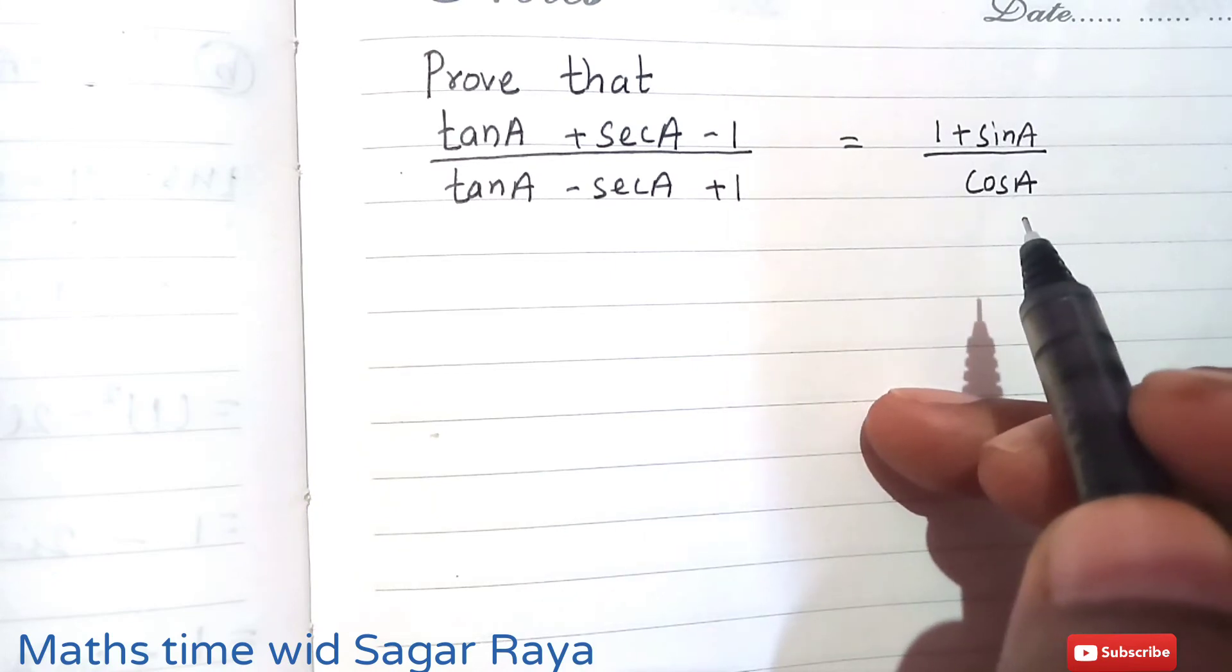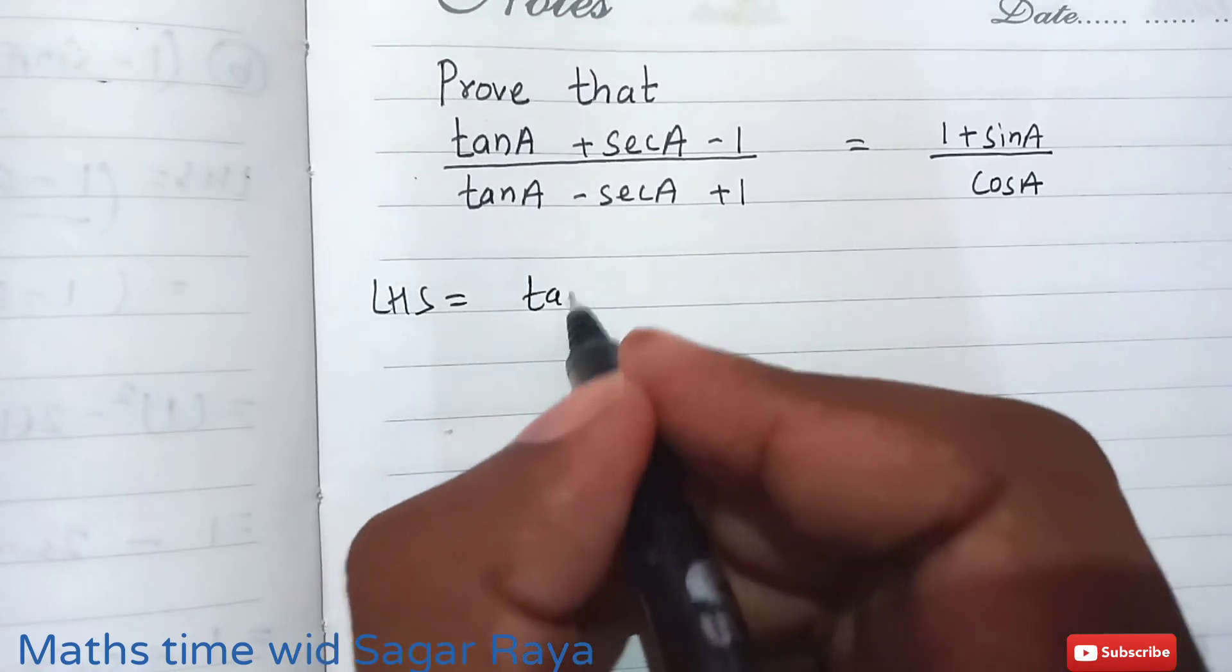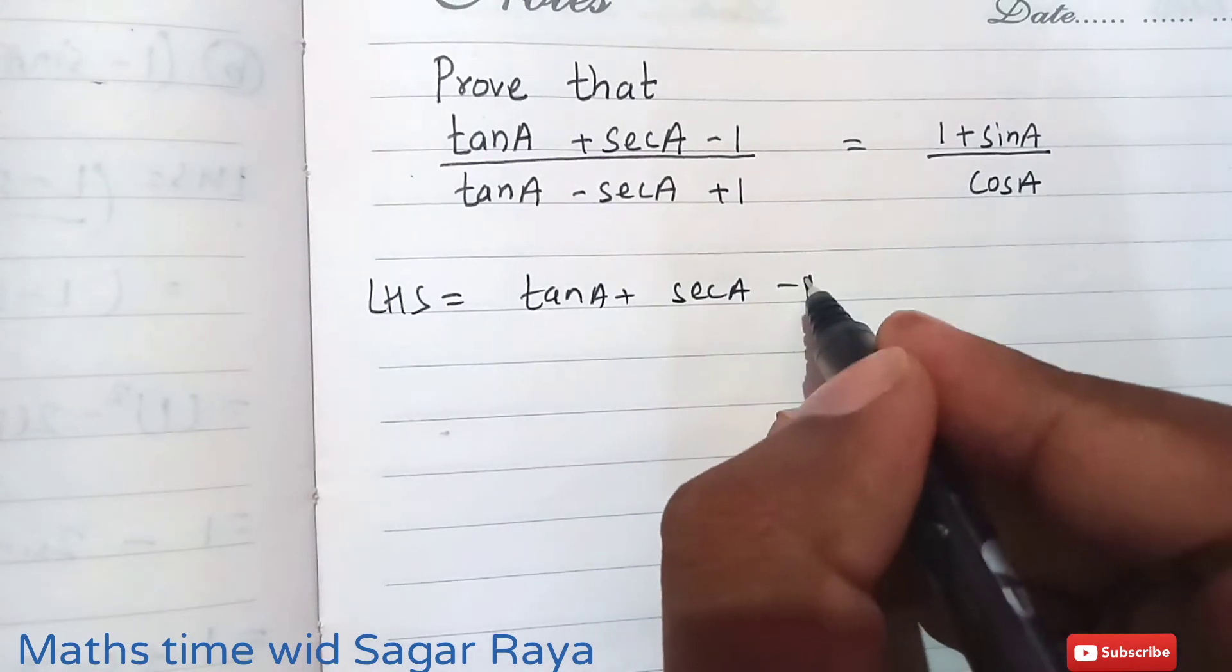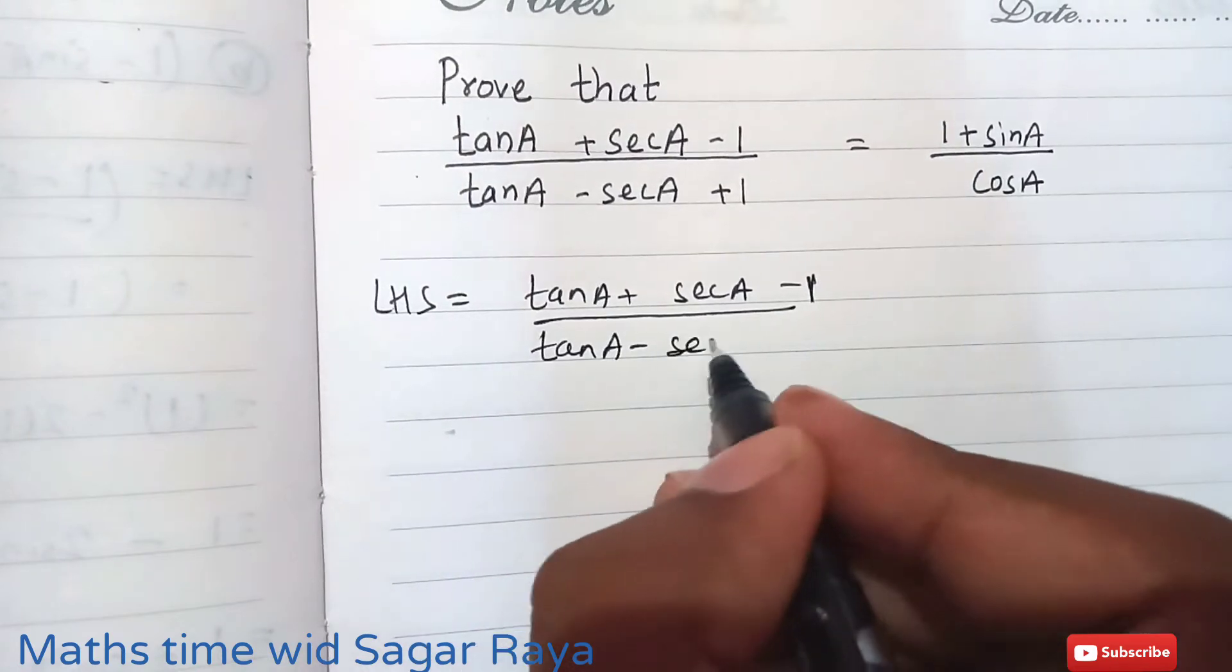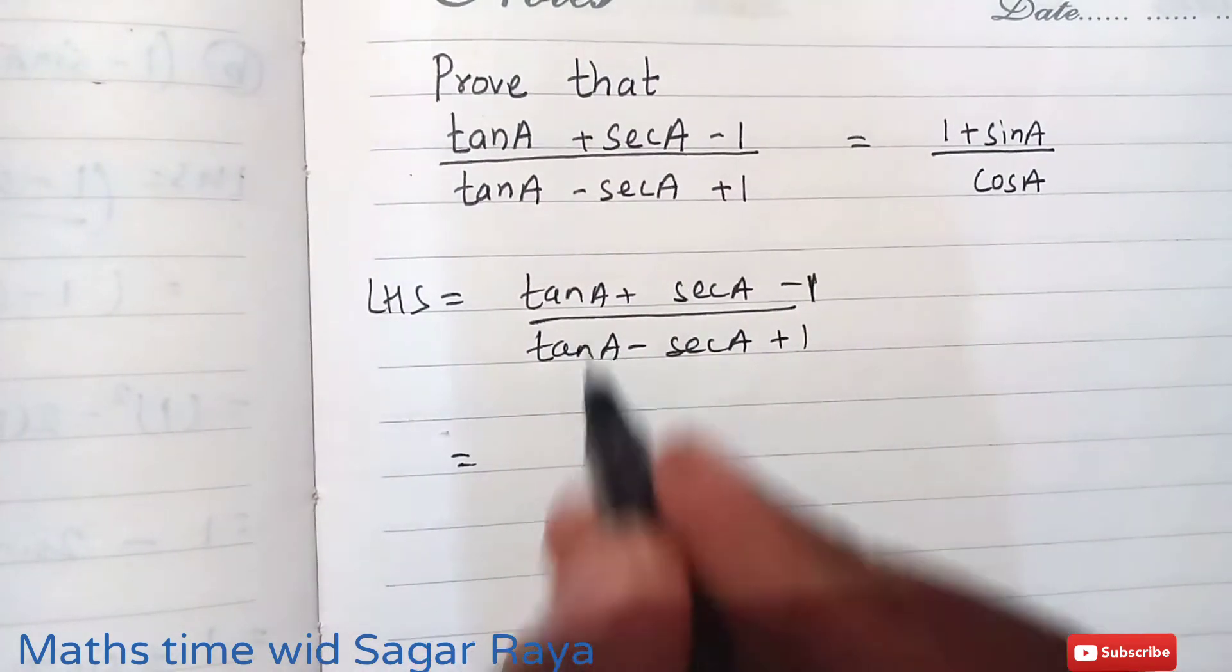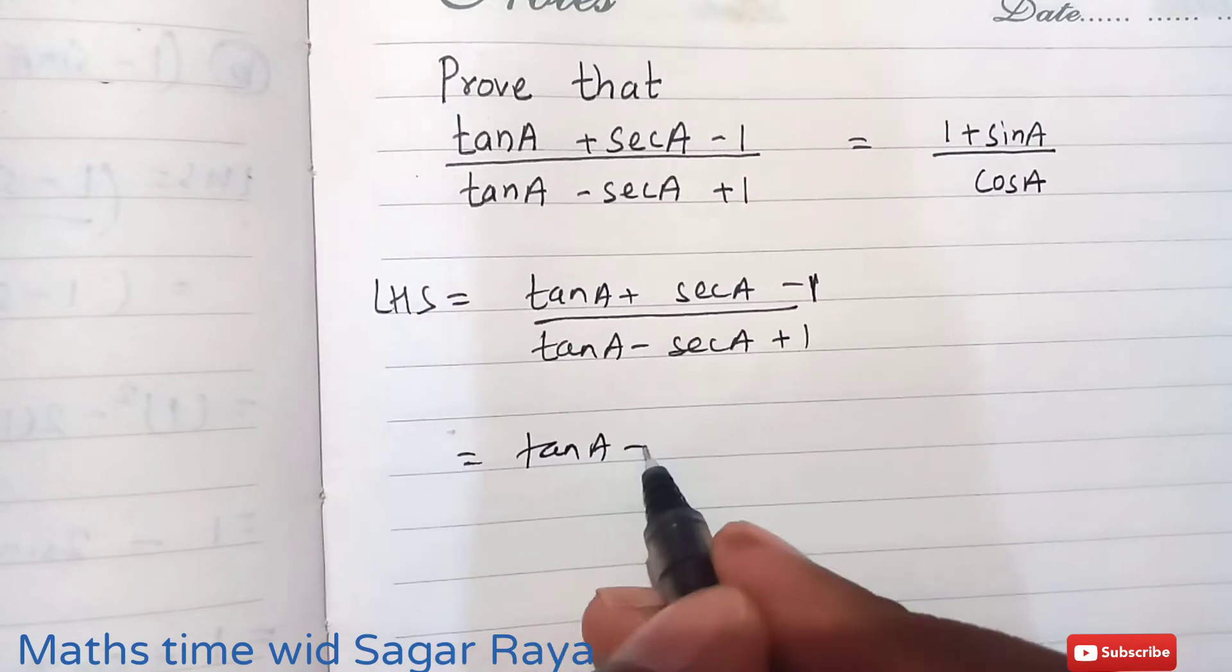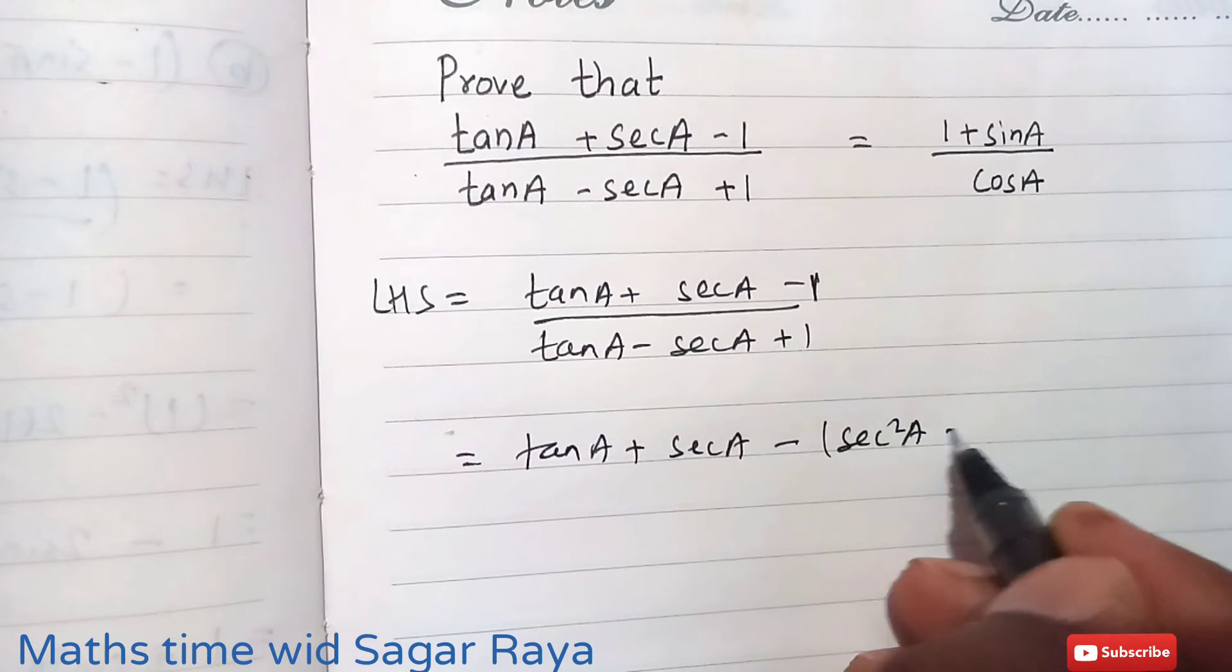Taking LHS: (tanA + secA - 1)/(tanA - secA + 1). So I am changing the upper numerator 1. Instead of 1 I can write sec²A - tan²A, and the denominator will be as it is.